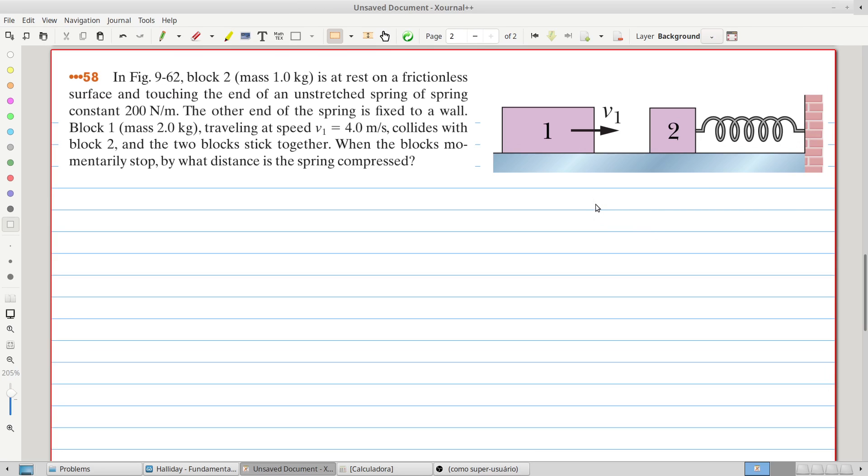The other end of the spring is fixed at a wall. Block 1 of mass 2 kilograms traveling at speed of 4 meters per second collides with block 2 and the two blocks stick together.